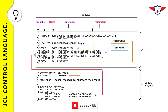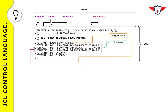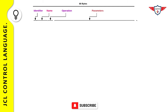Before discussing job control statements in detail, let's discuss two important topics: first, the coding rules for writing JCL, and second, JCL parameters including keyword and positional parameters. JCL statements are coded as 80-byte records. Out of those 80 bytes, the first 72 bytes are used for JCL statements, and the last eight bytes are reserved for an optional sequence number. No statement should go beyond column 71. If a statement goes beyond column 71, you can continue on the next line by putting a continuation character in column 72.